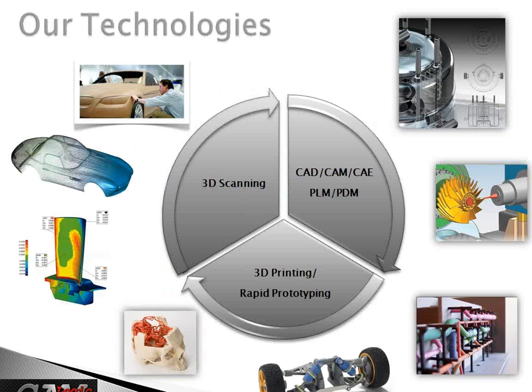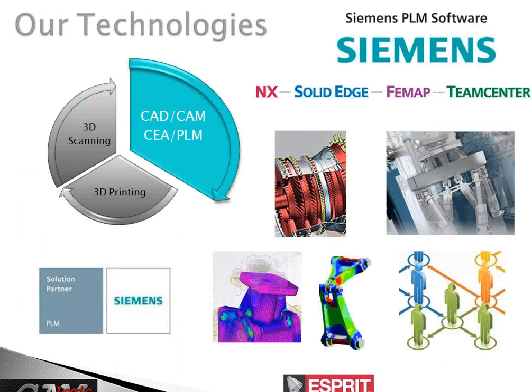As far as our technologies go, we cover 3D scanning, 3D printing, and rapid prototyping. Of course, we cover CAD/CAM, CAE, and the PLM/PDM side of the software. On the CAD/CAM, CAE, and PLM side, we've got NX, Solid Edge, and FEMAP, as well as TeamCenter — a complementary Siemens package of all the software and materials you need in order to run your business and produce your products.